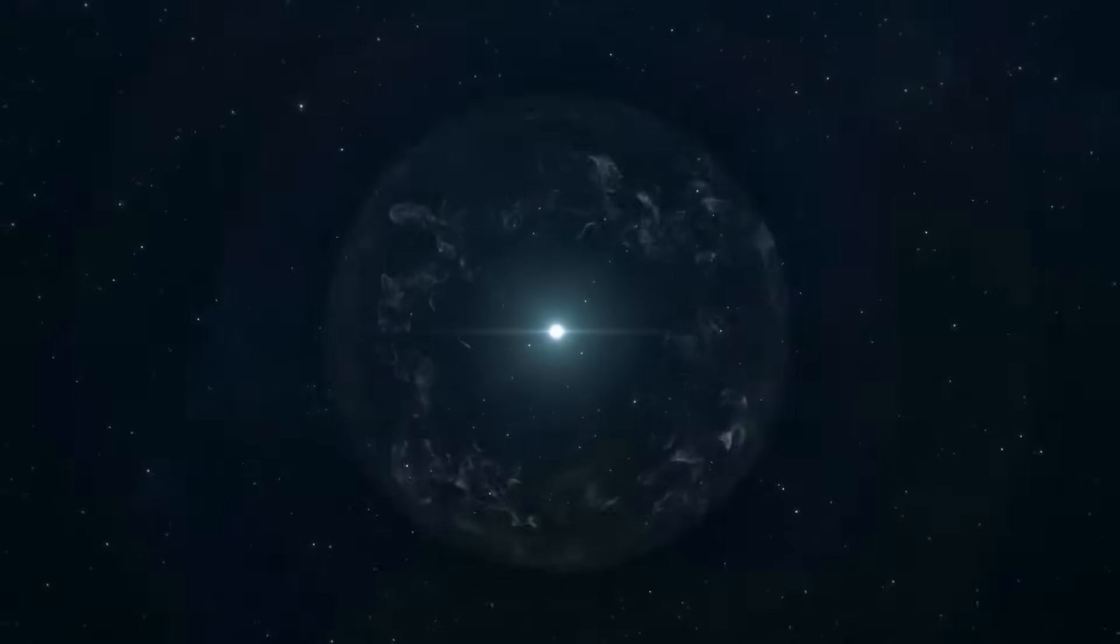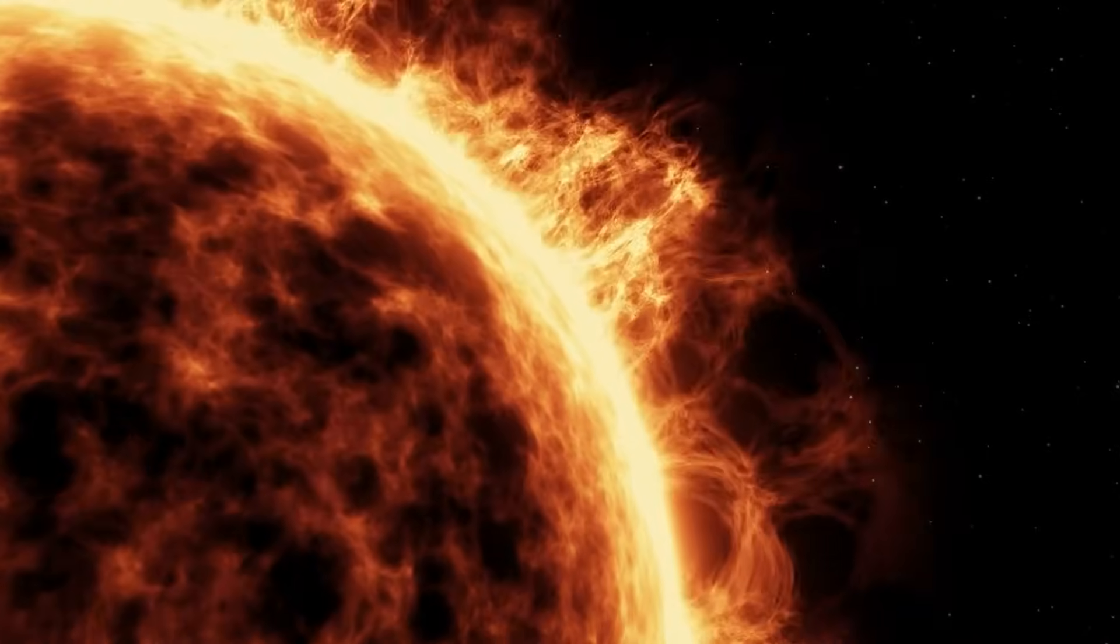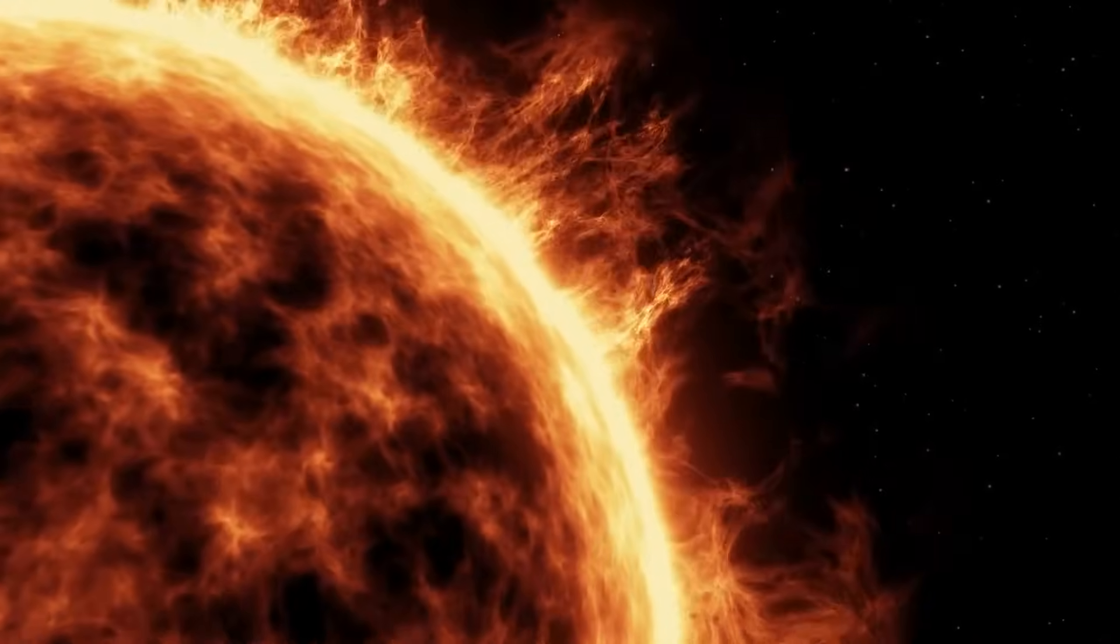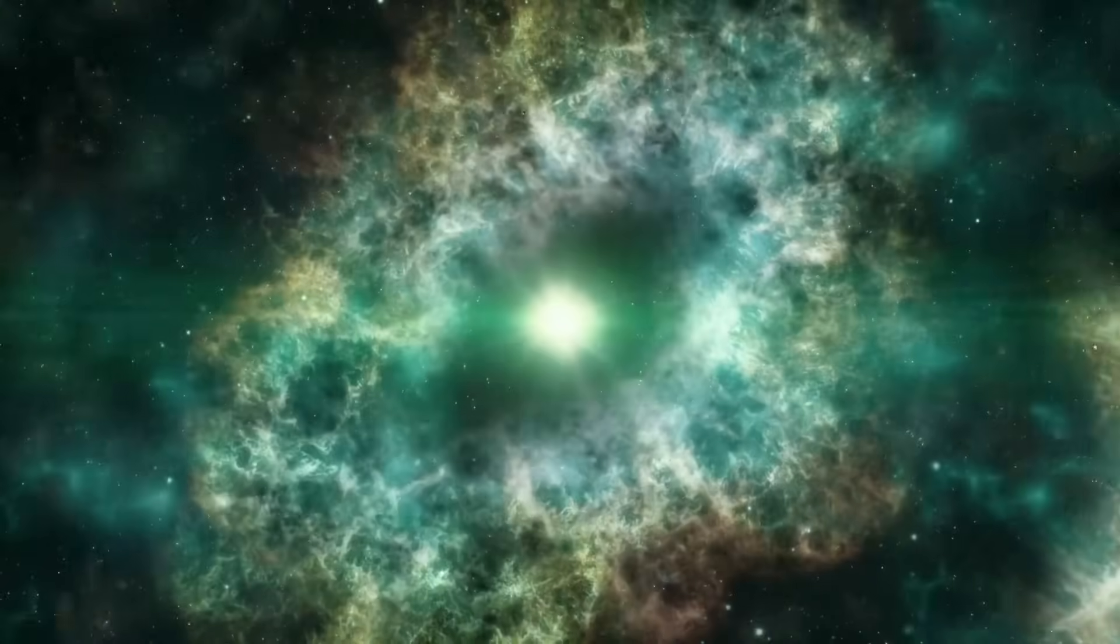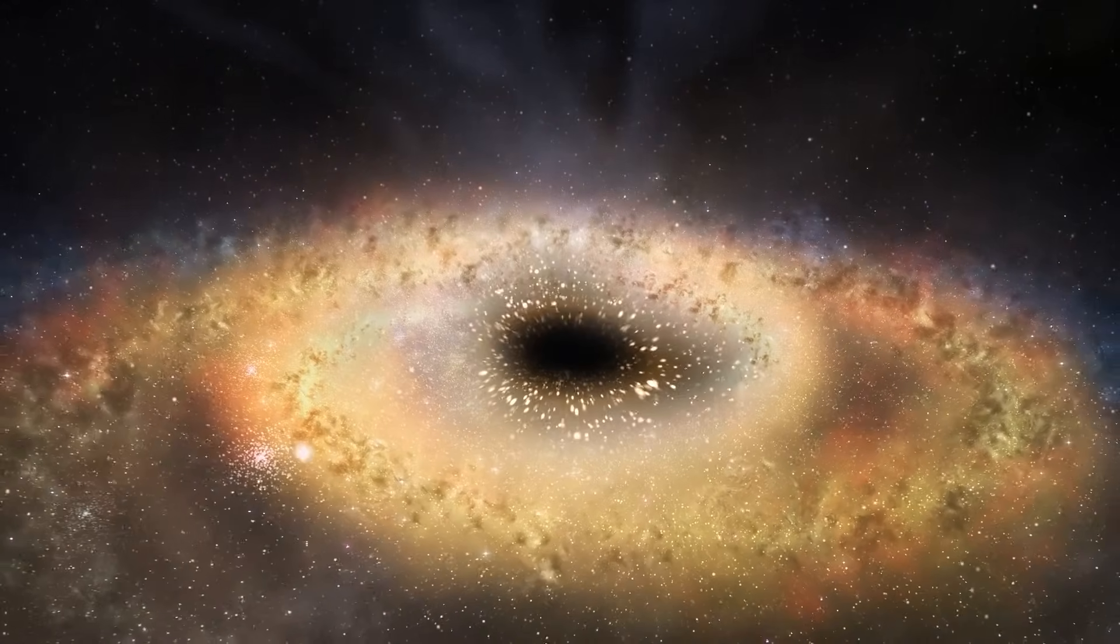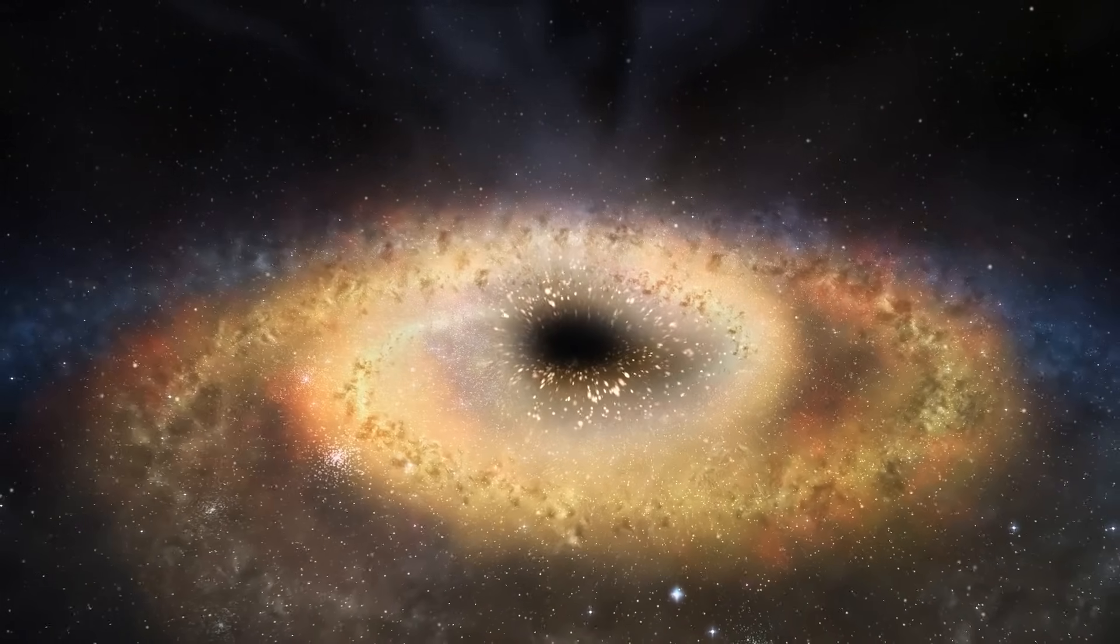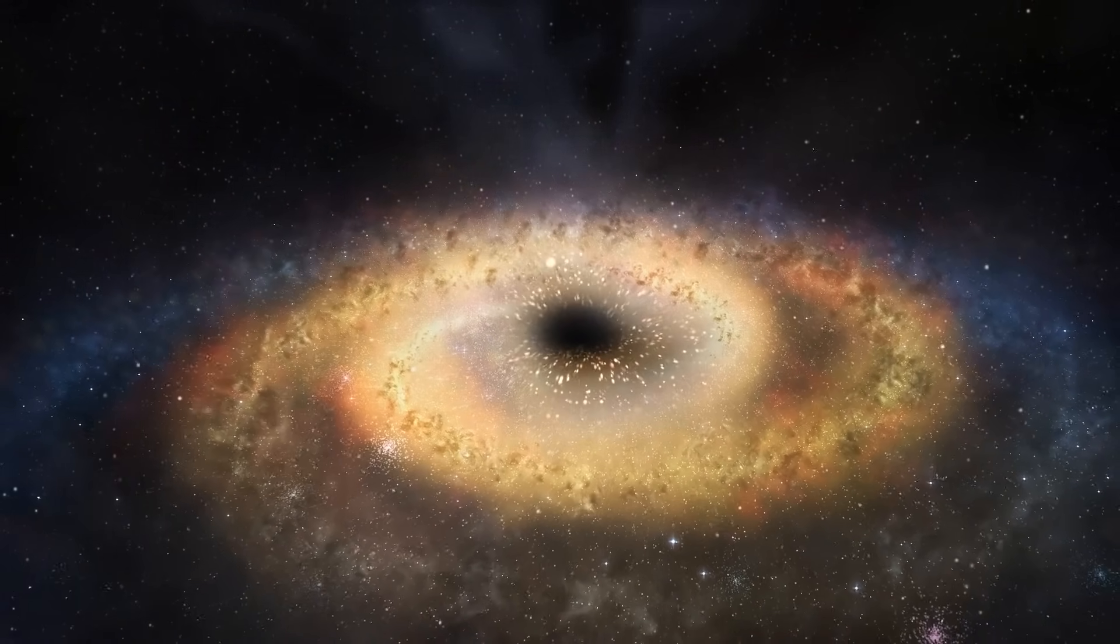The first pathway involves the death of massive stars. When stars that are around eight to ten times larger than our sun run out of fuel, they explode in a dramatic event called a supernova. What remains after the explosion is a very compact and dense object known as a black hole.